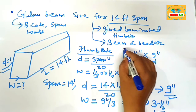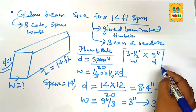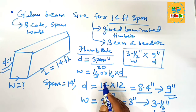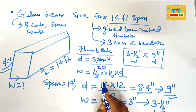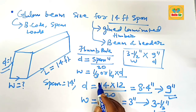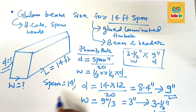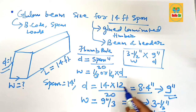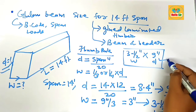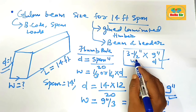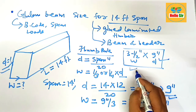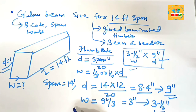So the correct glulam beam size needed for a 14-foot span is 9 inches deep and 3.5 inches wide. Thank you.